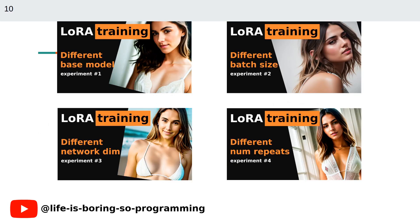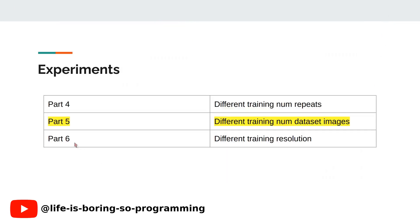Last time, we talked about using different training numbers of repeats. If you have not watched those previous experiment videos, you can find the link here or in the description below. Today we will talk about part 5: using a different number of dataset images.